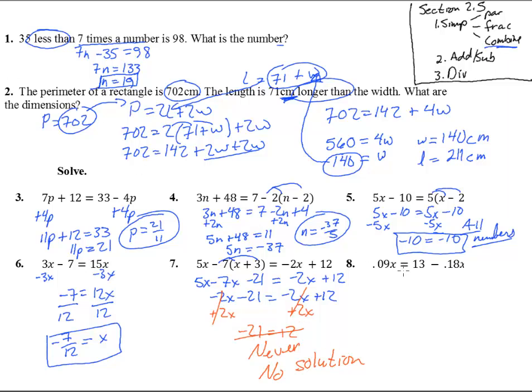And number eight. Ooh, 0.09X equals 13 minus 0.18X. No fractions. If you don't like decimals, we could times everything by 100. That might be kind of cool. You could just start adding the decimals, but I'm going to do it. I'm going to times everything by 100 just to see what happens with the decimals. If you don't like decimals, then times everything by 100, and you now have 9X equals 1300 minus 18X. Look at that. No decimals now.